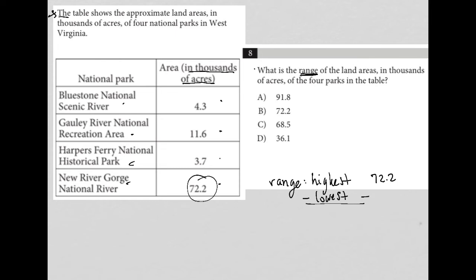We're going to subtract from that the lowest. The lowest area is 3.7 at Harper's Ferry. So we're going to subtract 3.7 from 72.2.